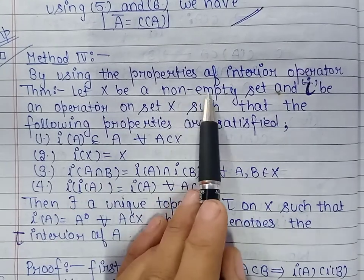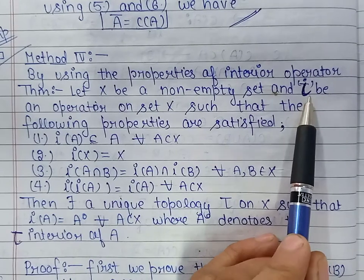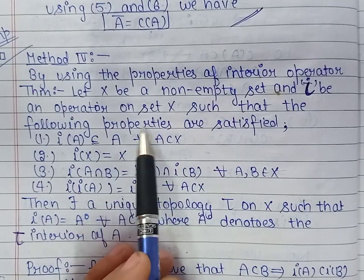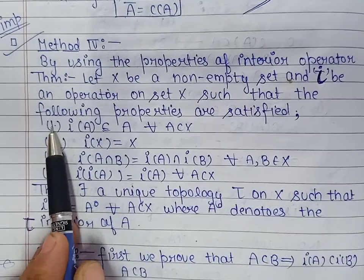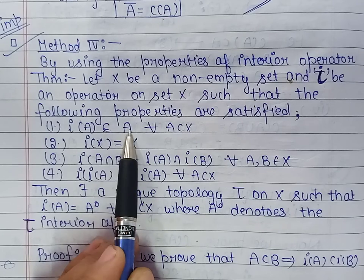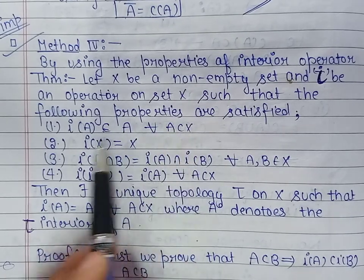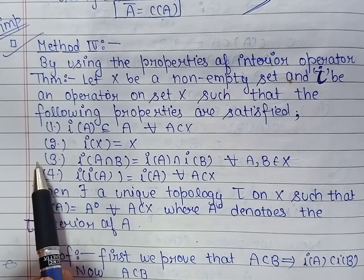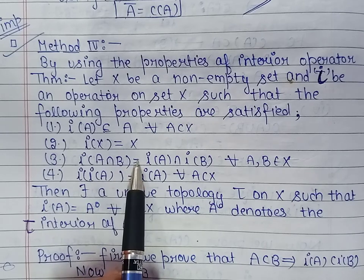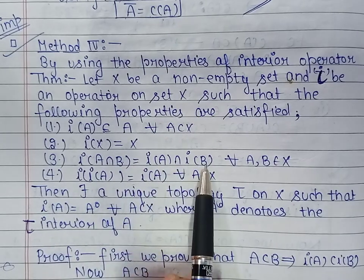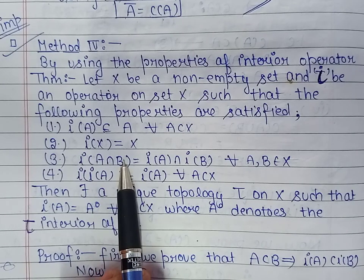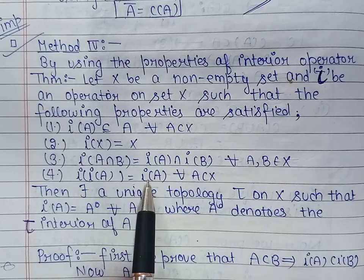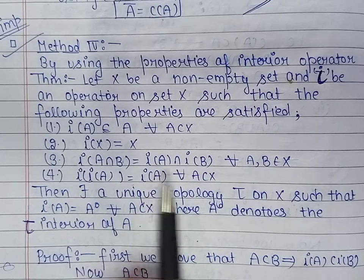Let us take a non-empty set X and I be an operator on the set X such that the following properties are satisfied. First property: I of A is contained in A for every A which is a subset of X. Second property: I of X is equal to the whole set X. Third property: I of A intersection B is equal to I of A intersection I of B, where A and B are subsets of X. And the last property: I of I of A is the same as I of A, where A is a subset of X.